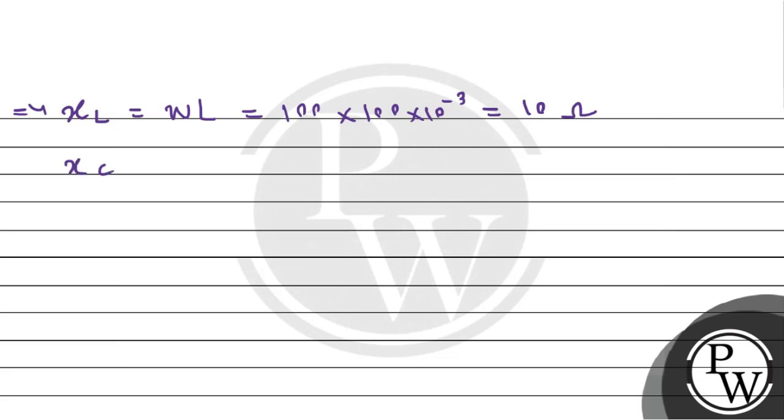Similarly, the capacitive reactance can be calculated as 1 by omega into C. That will be equals to 1 by omega 100 multiplied by capacitance 100 microfarad, that means 100 into 10 to the power minus 6. This will come out equals to 100 ohms.